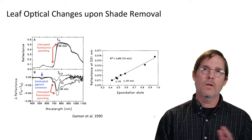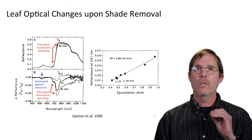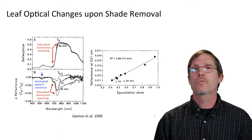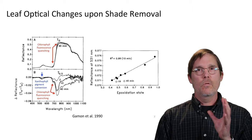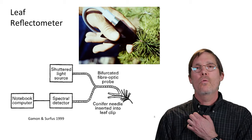Over longer time periods there are complicating effects of sun angle changes and canopy structure, but over the short time period, reflectance at 531 nanometers is a very good measure of what's happening with the xanthophyll cycle. I'll come back to this issue of the drift in a moment.